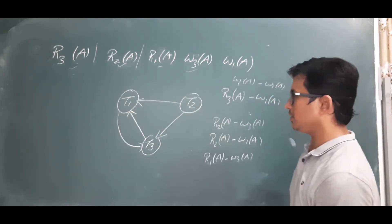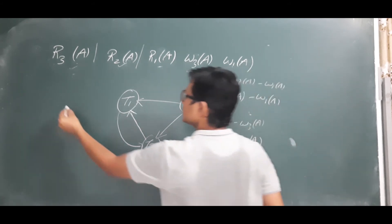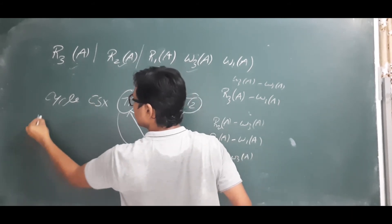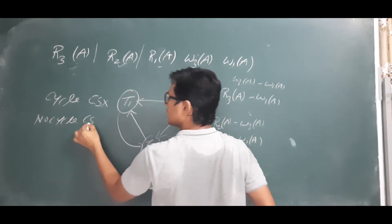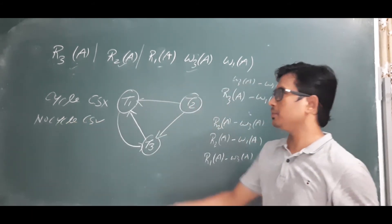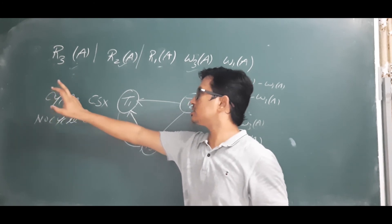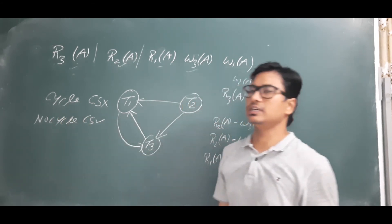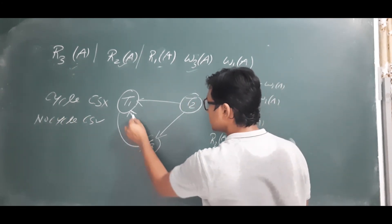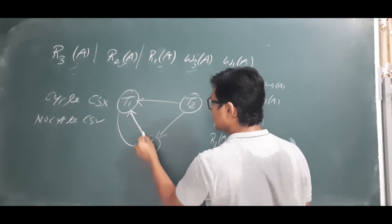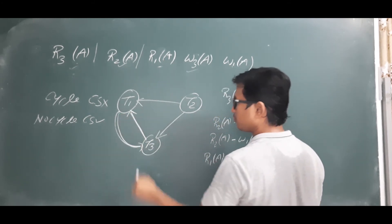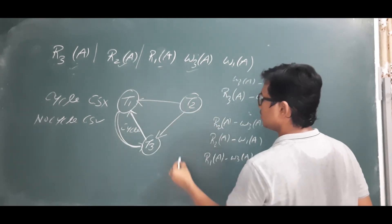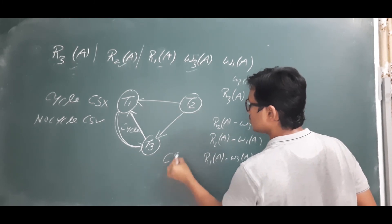The precedence graph is now complete. If there is a cycle then we say it is not conflict serializable; if there is no cycle then it is conflict serializable. In this case there is a cycle — T3 goes to T1 and T1 goes back to T3 — so the given schedule S is not conflict serializable.